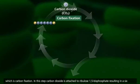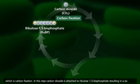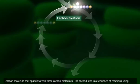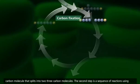In this step, carbon dioxide is attached to ribulose-1,5-bisphosphate, resulting in a six-carbon molecule that splits into two three-carbon molecules.